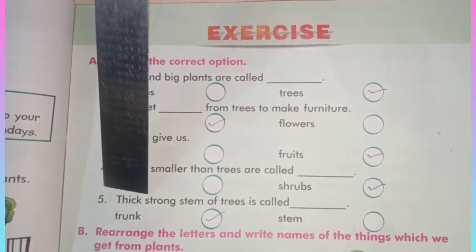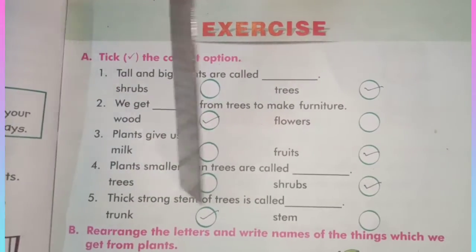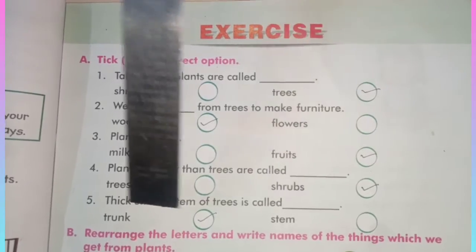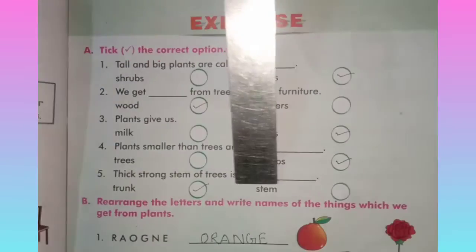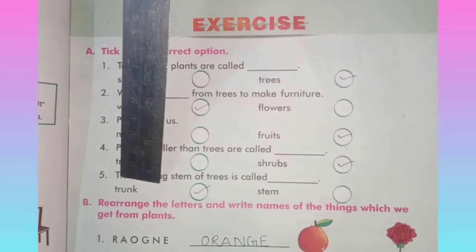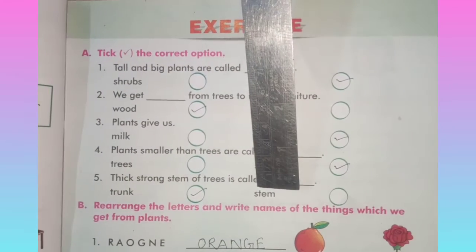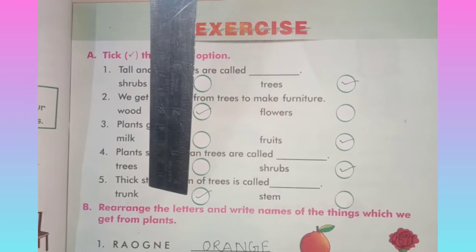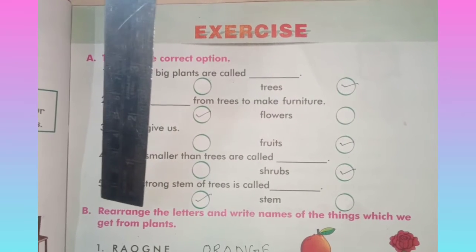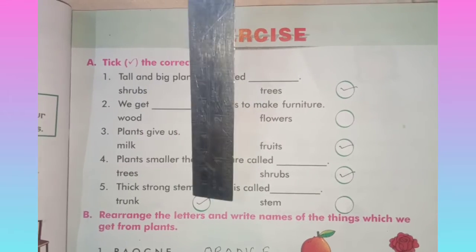Our last question is: Thick strong stem of a tree is called? There are two options. Which is the correct option students? Trunk or stem? Yes, you are correct — trunk. Trunk is the correct option. So we will tick on trunk.